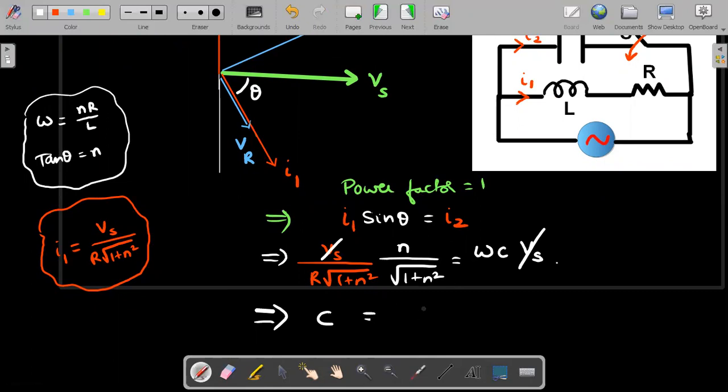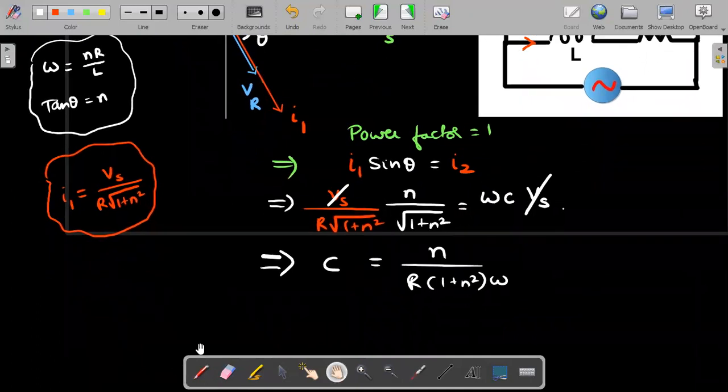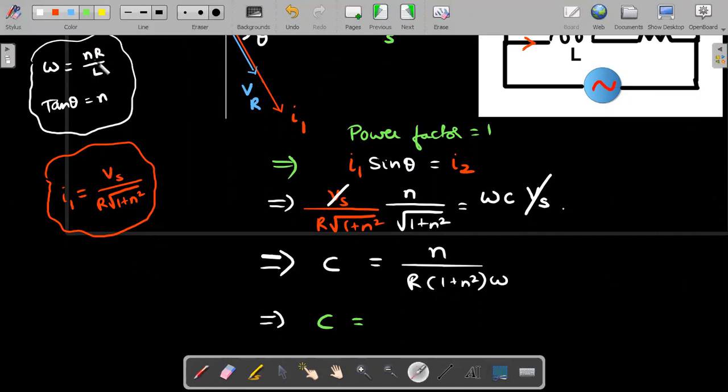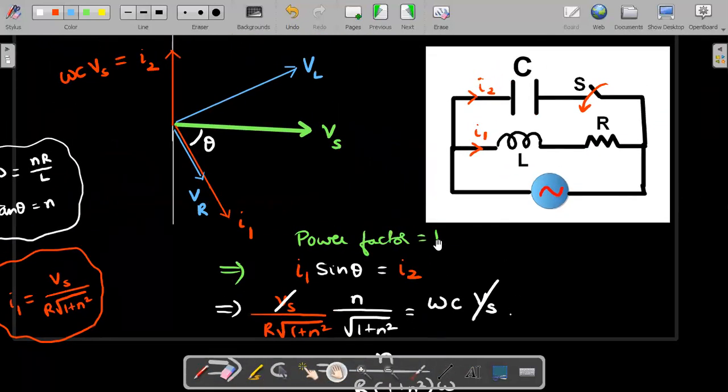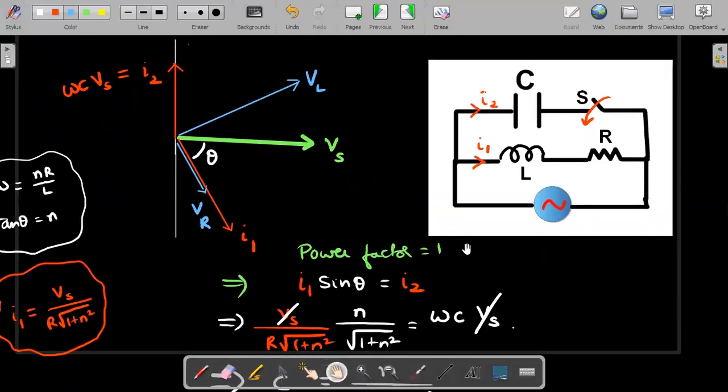From all of this, the value of Vs gets canceled, which was not mentioned in the question. Required value of C would be N divided by R into one plus N squared into Omega. Once you substitute the value of Omega in that expression, C comes out to be L divided by R squared into one plus N squared. This is the idea using the phasor diagram.